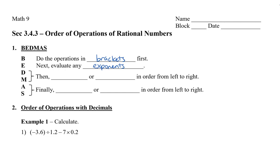Next, we have D and M, which stands for divide or multiply. You're going to work on that in order — so if there is a division first before multiplication, then do the division first. However, if the multiplication symbol comes first, then do the multiplication before the division. And finally, we have A and S, which stands for add or subtract. Similarly to division and multiplication, we work in order from left to right, whichever comes first.